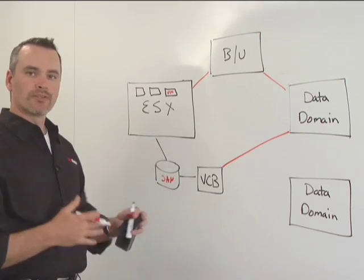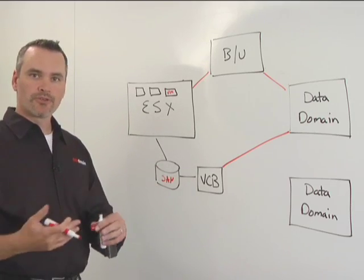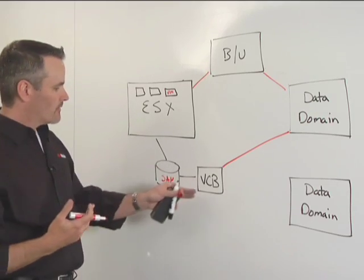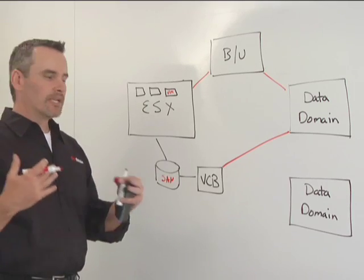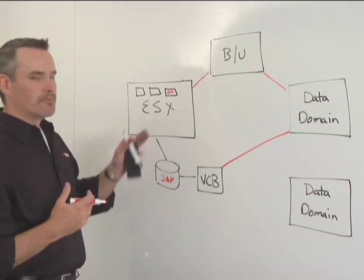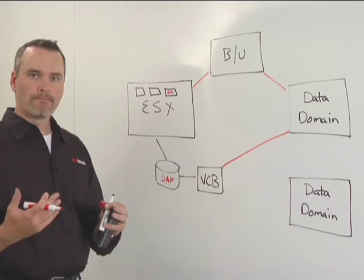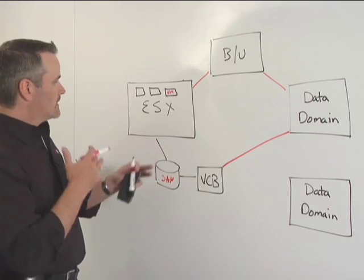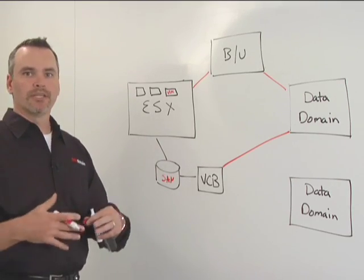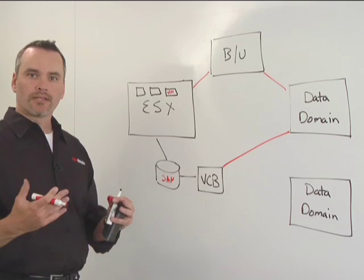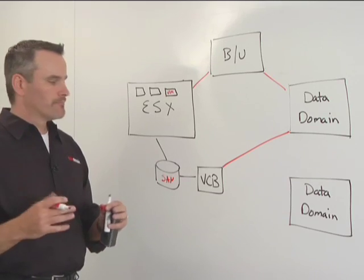It requires a little bit of infrastructure — it requires a SAN and a VCB proxy. But it absolutely doesn't impact the ESX host while it's running. It's used for high availability, round-the-clock types of environments.